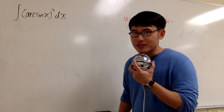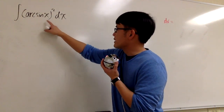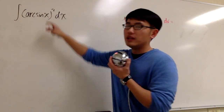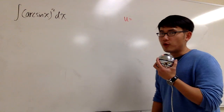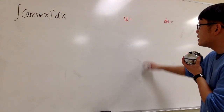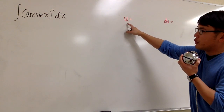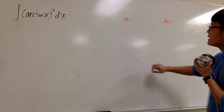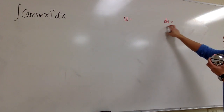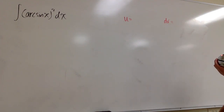Let's do integration by parts for the integral of arc sine x to the second power. I'm going to show you the traditional format, where we think about what to pick for u so we can differentiate that, pick something for dv, and then integrate that.